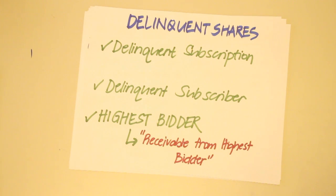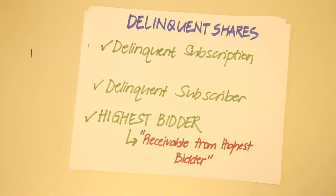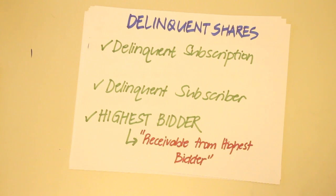There may be instances when a subscriber cannot pay in full the amount subscribed. The payment of the balance may be specified in the contract of subscription or may be subject to call by the board of directors. According to the Corporation Code of the Philippines, if within 30 days from the said date no payment is made, all stocks covered by the subscription shall become delinquent and shall be subject to sale. When a subscriber fails to pay on the call date, the corporation sends notices. If no payment is still made, the subscription is declared delinquent and the subscriber is referred to as a defaulting subscriber.